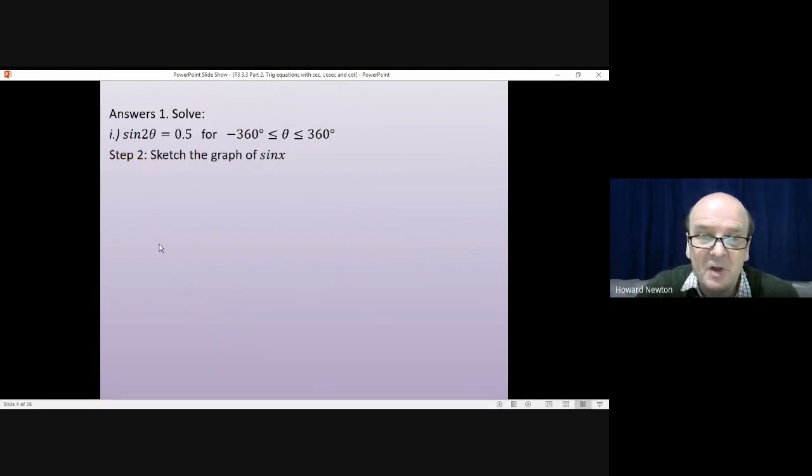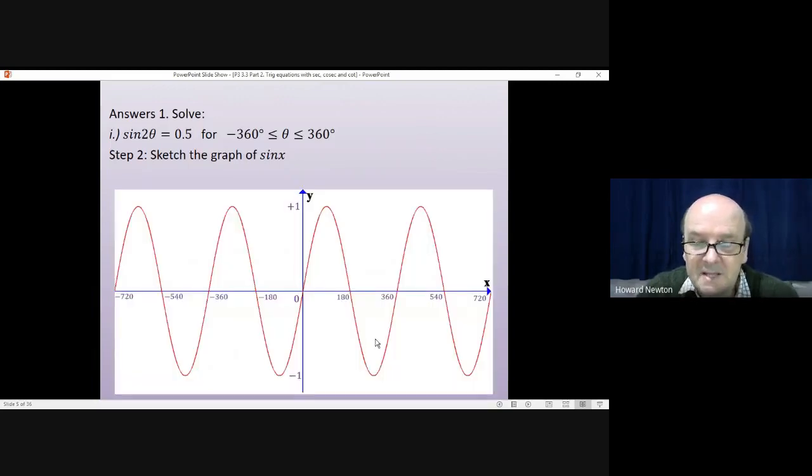Step 2 is sketching the graph of sine x. So we'll do that. That is what sine x looks like. Only three key things to remember. First of all, sine x starts at 0. Second thing, it goes from plus 1 to minus 1. And the third thing is something happens every 90 degrees. So it starts at 0. The maximum is at 90. Crossing point at 180. Minimum at 270. Crossing point at 360. And so on and so on.